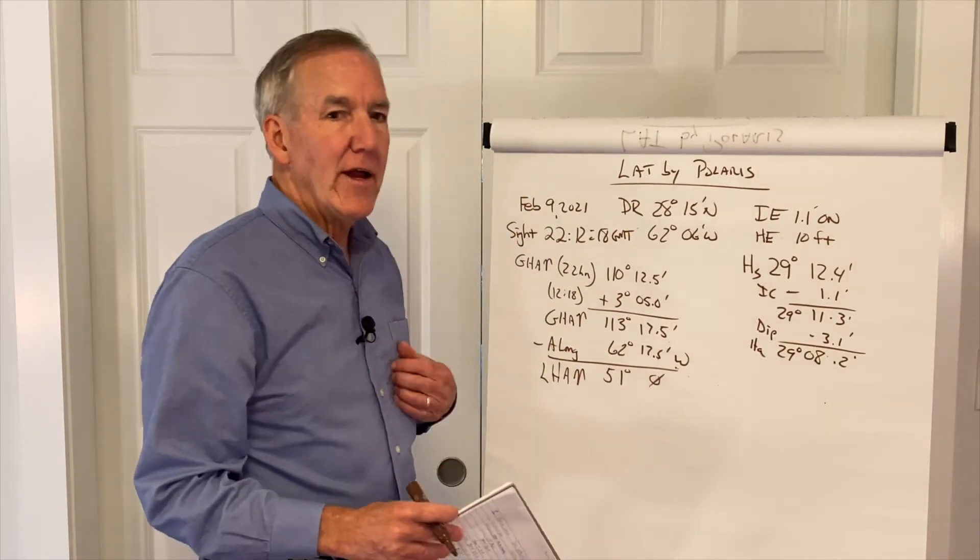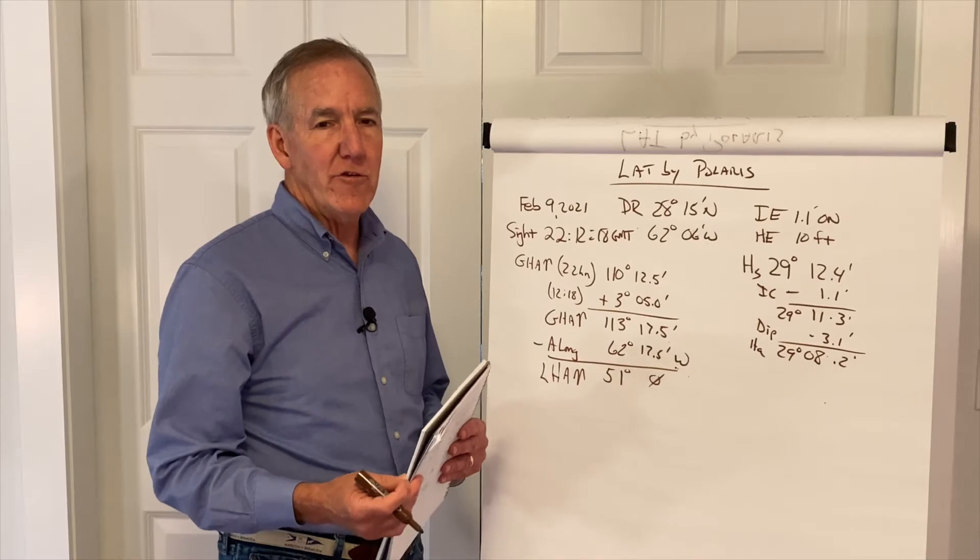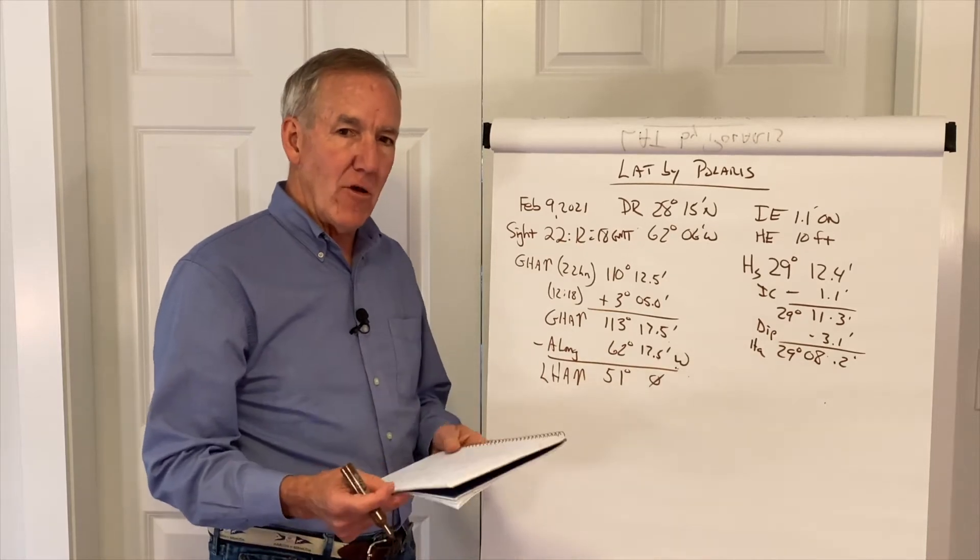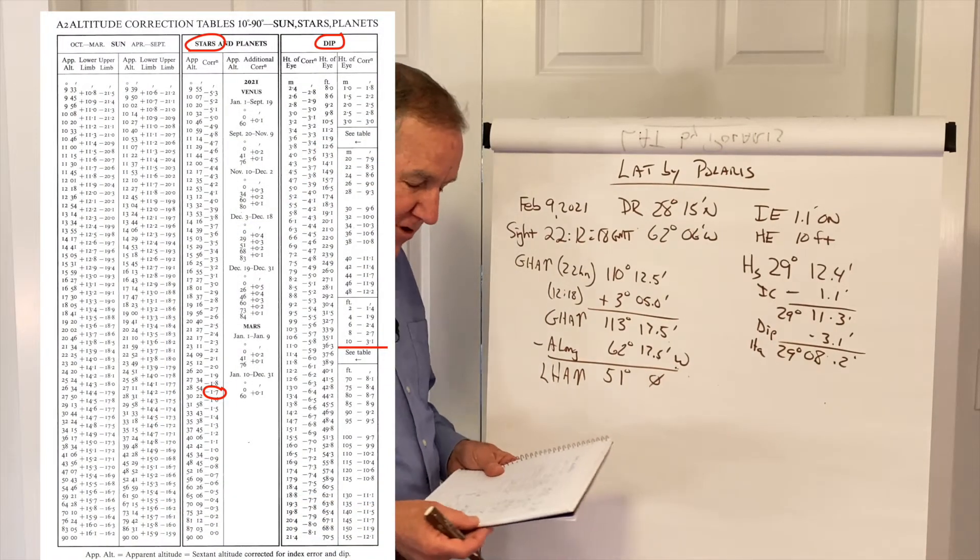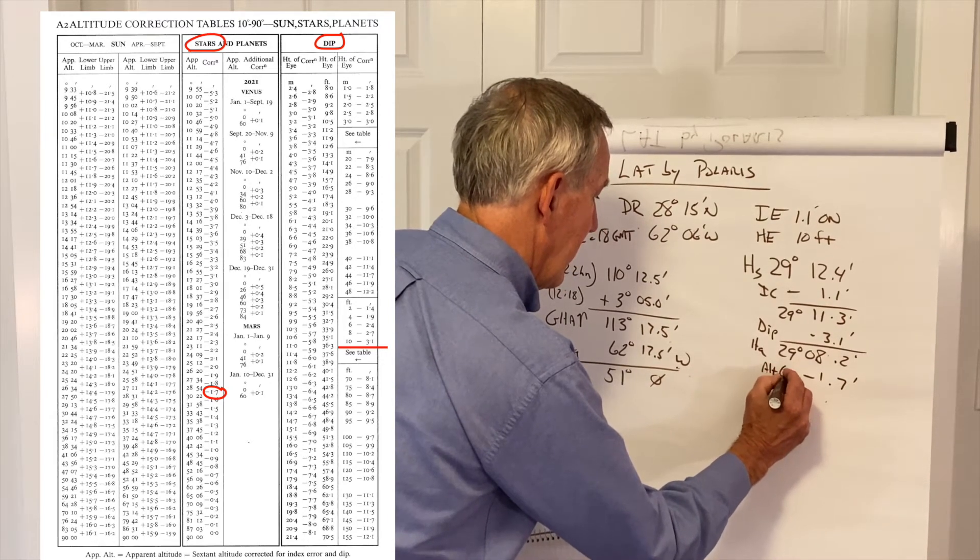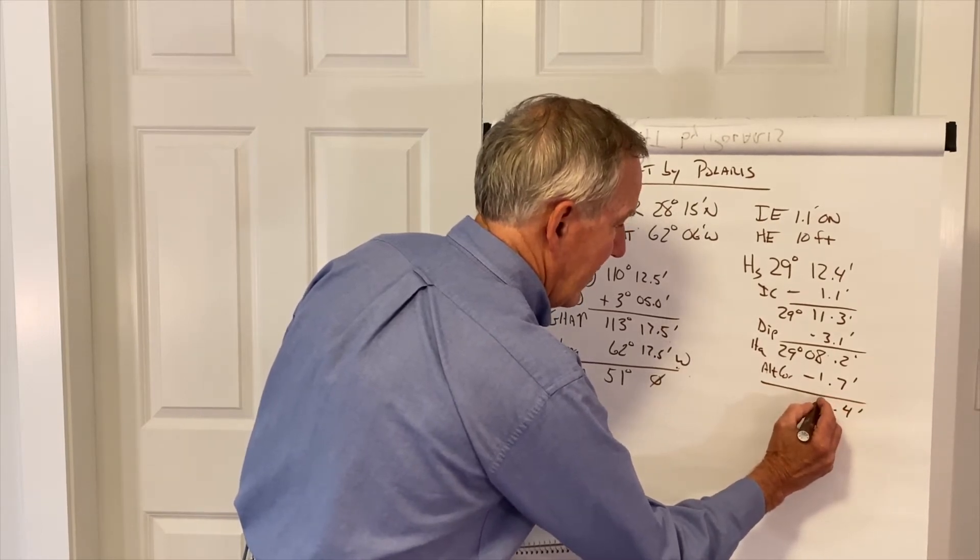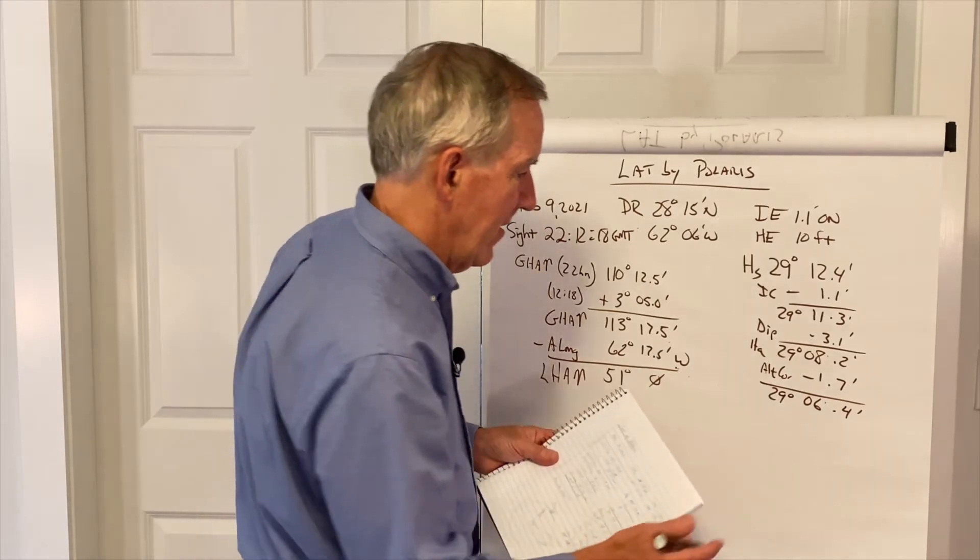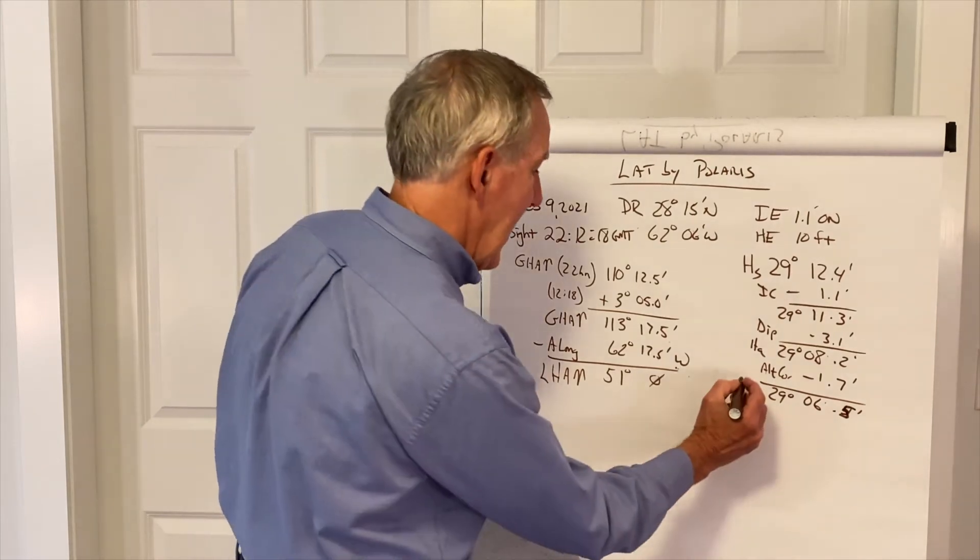Now on the inside, in the altitude correction tables, under the stars and planets column, there is just one correction, and that is for refraction. Go down until you find two values that bracket 29 08, and you pull up the altitude correction of minus 1.7. That gives us 29 degrees, 6.5 minutes. And that is our HO.